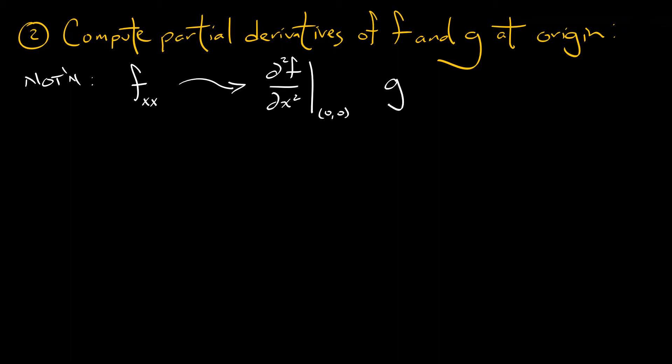If I write g xxy, that means you take the third partial derivative of g, doing two partials in x, one partial in y, evaluated at the origin. Of course, as always, the order doesn't matter, assuming that f and g are sufficiently smooth, which of course we have to assume.